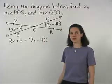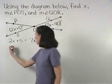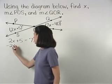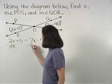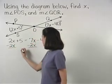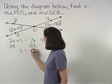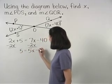Solving from here, we subtract 2x from both sides to get 5 equals 5x minus 40,